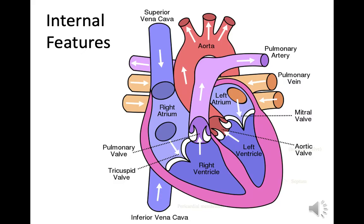We're going to look at some of the internal features of the heart: the pulmonary valve, the tricuspid valve, the right ventricle and left ventricle, the right atrium and the left atrium, the aortic valve, and the mitral valve. We'll also look at the external features, which are labelled, later on through the slides.